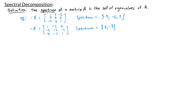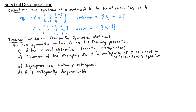The spectral theorem for symmetric matrices is a series of statements about the eigenvalues of symmetric matrices. We won't be going over the proof in this video, but the spectral theorem states the following. An n by n symmetric matrix A has n real eigenvalues counting multiplicities, and the dimension of the eigenspace for any eigenvalue lambda equals the multiplicity of that lambda as a root of the characteristic equation.